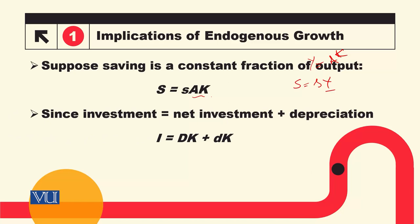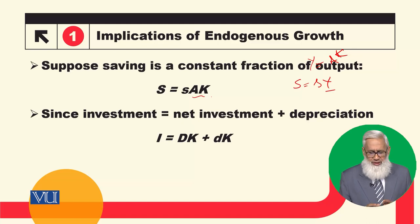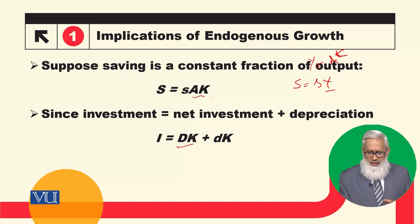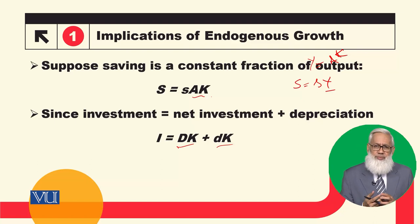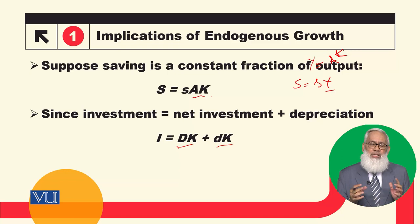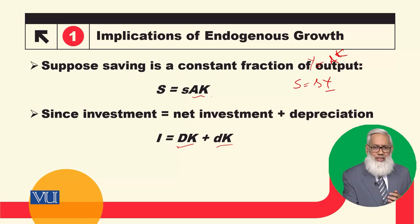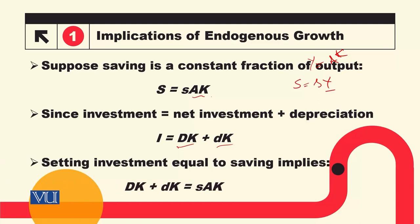In a closed economy, investment equals saving. Investment has two components: net investment, which is the net change in capital stock (delta K), and depreciation — the existing capital stock that depreciates when used in the production process and must be replaced. So gross investment I equals delta K plus depreciation.